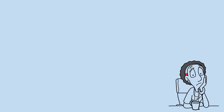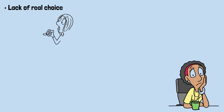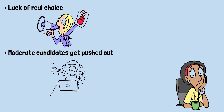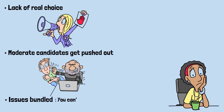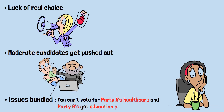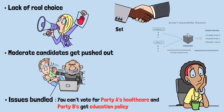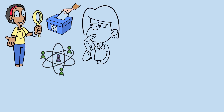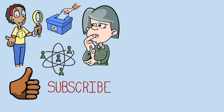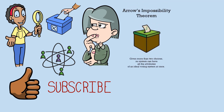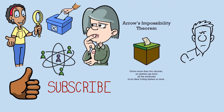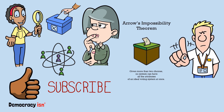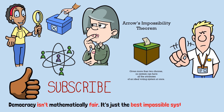But two-party systems create their own problems: lack of real choice, voting against someone rather than for someone, moderate candidates getting pushed out, primaries selecting for extremes, and issues getting bundled — you can't vote for party A's health care and party B's education policy. We've traded Arrow's paradoxes for a different set of problems. But at least the math works. Democracy isn't mathematically fair — it's just the best impossible system we've got.